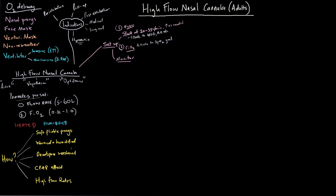Dead space washout comes up quite often — the idea that putting high flows of gas into the patient's upper airway flushes out anatomic dead space in the nasopharynx, and potentially down into the trachea and main stem bronchi. There's not a lot of robust evidence behind this, but it's intuitive that a huge amount of flow would flush out dead space, filling it with freshly oxygenated gas rather than the exhaled gas from the previous breath, which reduces work of breathing.